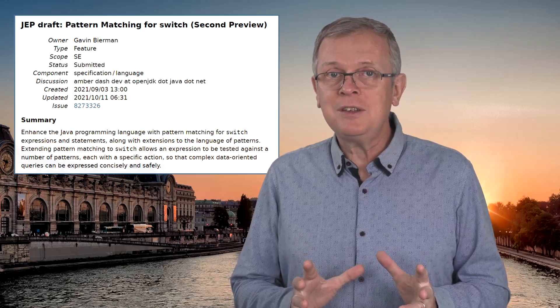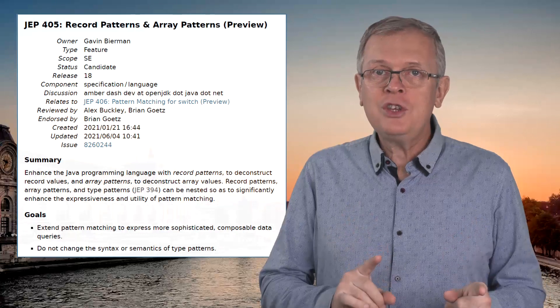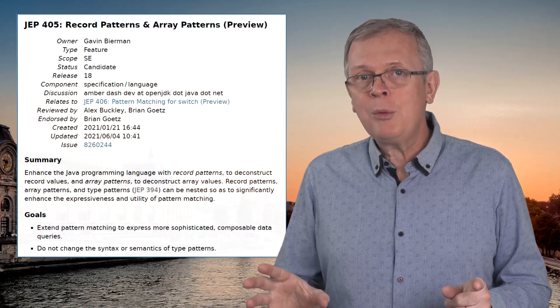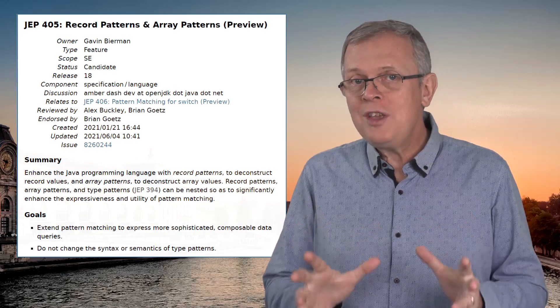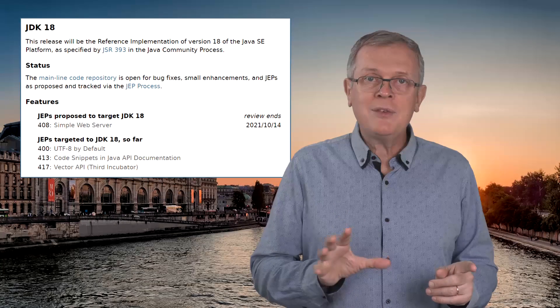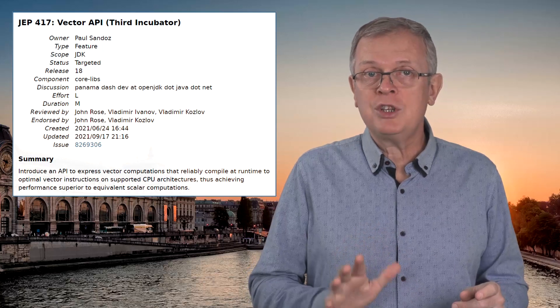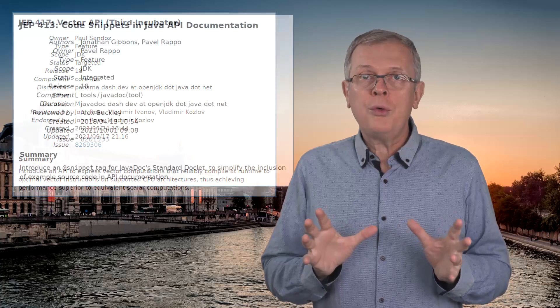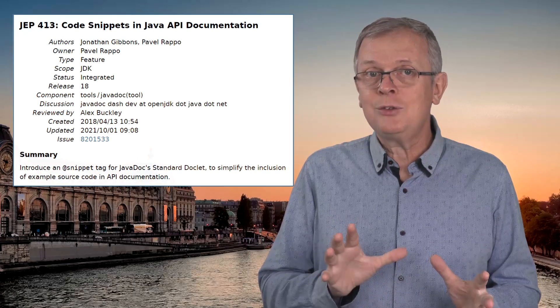The JDK 18 is bound to be released in March 2022. We should have another preview of pattern matching for switch, which is already a preview feature in the JDK 17. We should also have a preview of record pattern matching with record deconstruction and array pattern matching. These two features are covered in JEP 405, record patterns and array patterns. This is still a preview JEP and still a candidate to be integrated in the JDK 18, so things may change before the integration. The JEP 400 UTF-8 by default is already targeted. We should have a third incubator version of the Vector API delivered by Project Valhalla, and the same goes for JEP 413 — code snippets in Java API documentation. I will record a JEP Cafe about it, so stay tuned for more.